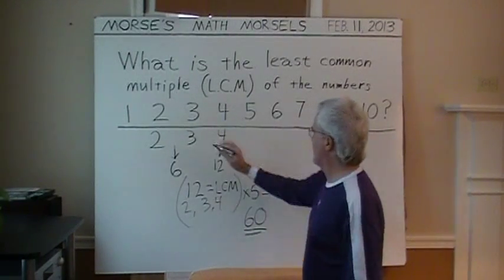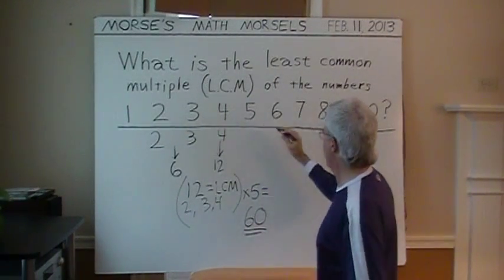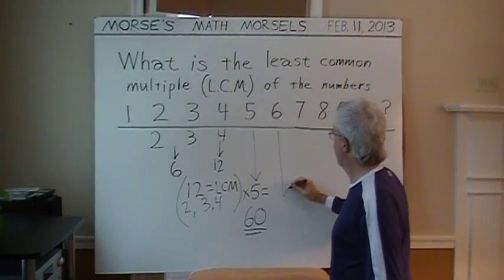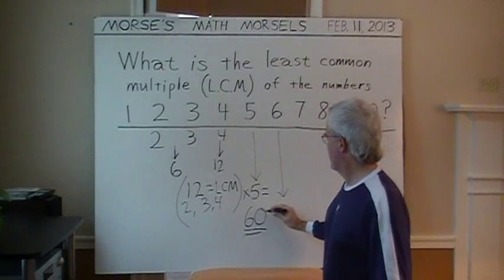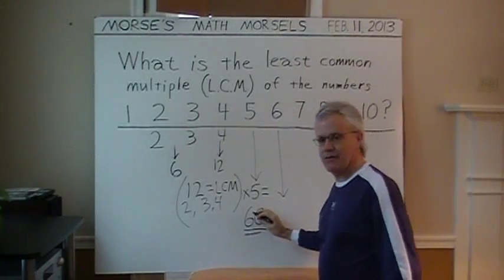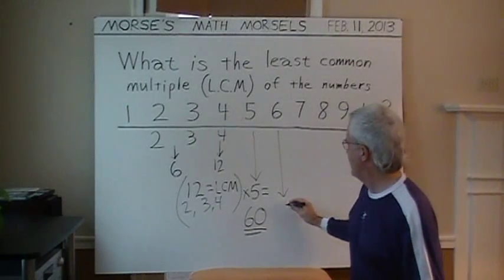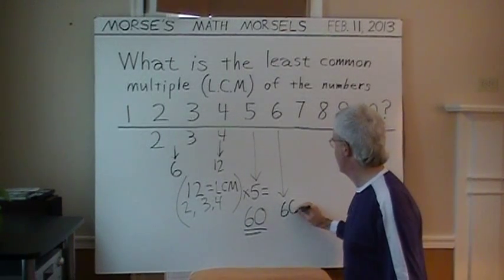Well, we have 60 as the least common multiple from 1 through 5. Now for 6. Well, if you compare 6 and 60, 60 is just 6 times 10. It's just a 6 with a 0 on the end. So, our LCM is still 60.